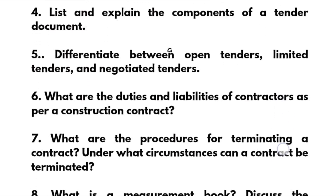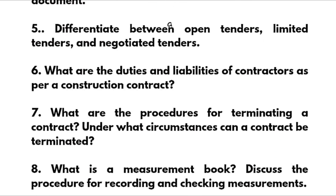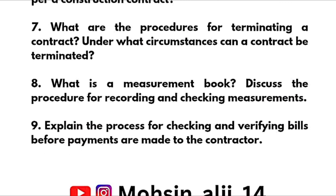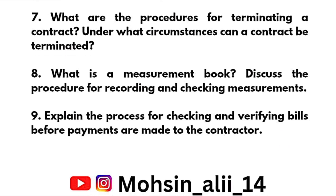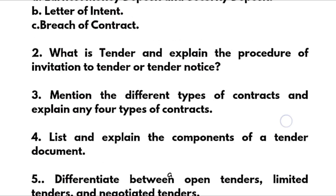Further Module 5 questions: differentiate between open tenders, limited tenders, and negotiated tenders. What are the duties and liabilities of contractors as per a construction contract? What are the procedures for terminating a contract, and under what circumstances can a contract be terminated? What is a measurement book — discuss the procedure for recording and checking measurements, and explain the process for checking and verifying bills before payments are made to the contractor.